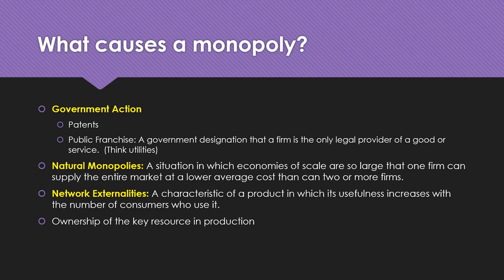A patent gives you the right to exclude others from producing a good or service claimed within the terms of the patent, and you have that monopoly right for up to 20 years from the filing date. Most patents take about 18 months to three years to be approved, so you're really looking at 17 to 18.5 years. In the pharmaceutical industry, drugs take about 8 to 10 years to be approved by the FDA, leaving about 10 years of patent protection.